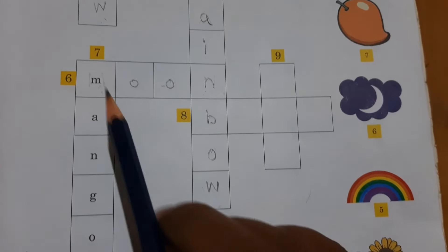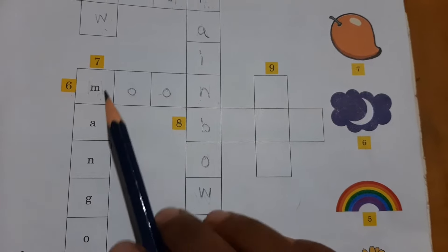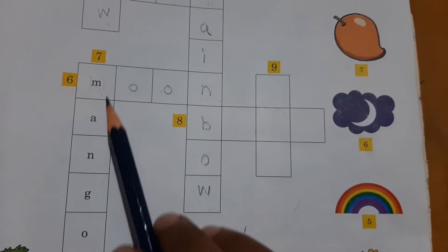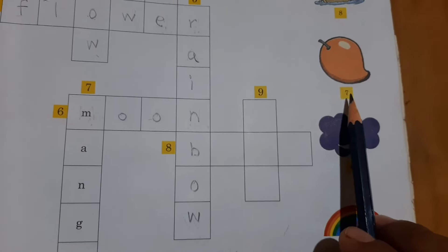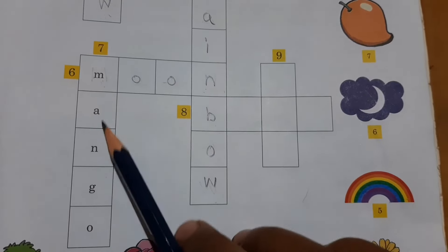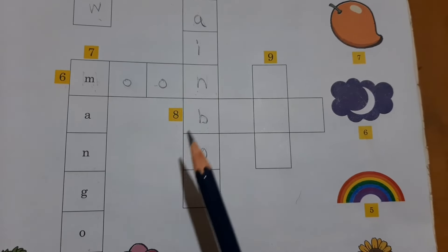Now come to number 7. It's already given over here. Spelling of M-A-N-G-O, mango. As you can see here, number 7 picture is mango. Spelling is M-A-N-G-O.